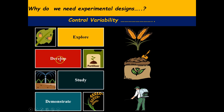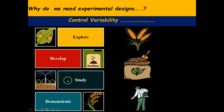As far as development is concerned, we develop new agricultural practices, technologies, or products based on findings from exploratory experiments. For example, we might develop new fertilizers with optimized nutrient composition or precision farming tools for more efficient resource management. Regarding study, we conduct systematic studies to understand underlying principles and mechanisms governing agricultural processes — for example, studying the effects of different irrigation methods on crop water use efficiency, or the impact of crop rotation on soil health.